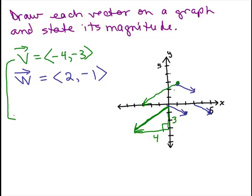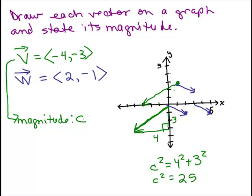So for V, the magnitude, if you're not sure what it is, the hypotenuse squared, I'll call c squared, is going to be 4 squared plus 3 squared. Well, that's 16 plus 9 or 25. So the length of the magnitude of V would be 5, the square root of 25. So that's the magnitude of V.